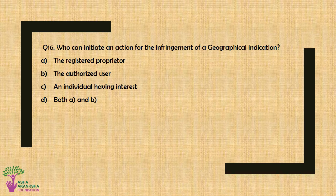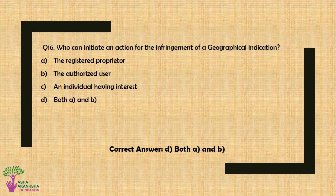Question No. 16: Who can initiate an action for the infringement of a geographical indication? Option A: The registered proprietor, Option B: The authorized user, Option C: An individual having interest, or Option D: Both Option A and Option B. The correct answer is Option D — Both the registered proprietor and the authorized user.